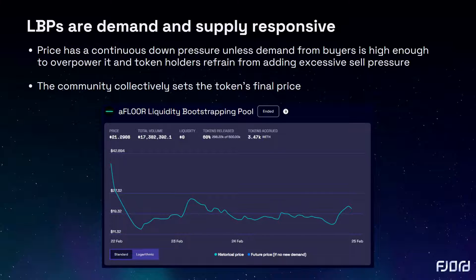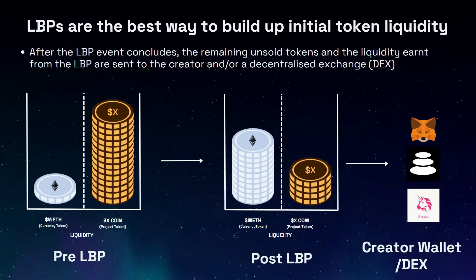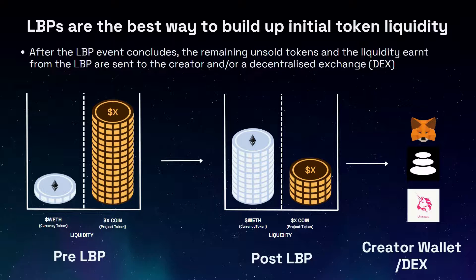Price gradually starts to decrease again until buyers step in once more and ensure an organic price is found. At the end of the LBP event, the remaining tokens and collateral token — Ethereum in this example — are transferred to the LBP creator. The creator will then typically use these funds to add liquidity on a decentralised exchange or to support building their idea.